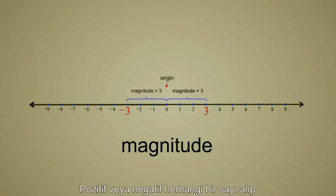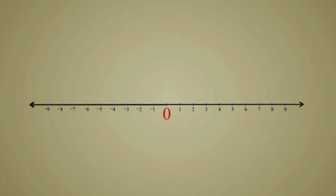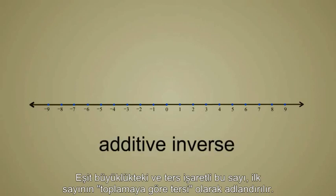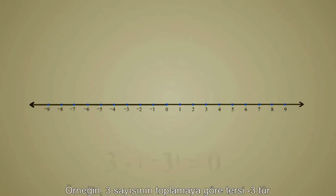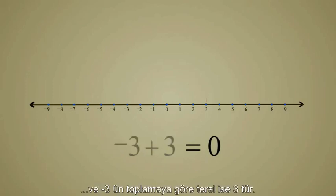If you take any number, positive or negative, and add a number of the same magnitude but the opposite sign, the result will be zero. This number of equal magnitude and opposite sign is called the number's additive inverse. Any number plus its additive inverse is zero. For example, the additive inverse of positive 3 is negative 3, and the additive inverse of negative 3 is positive 3.